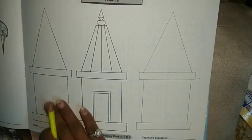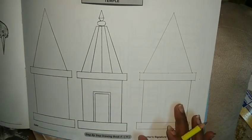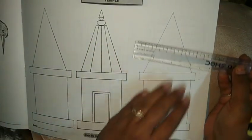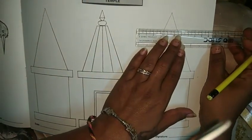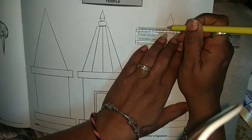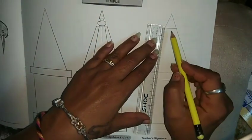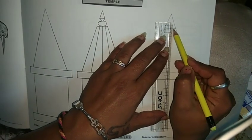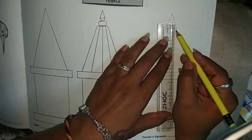So here our step number one is ready. Now let's move to step number two. Here we will draw one sleeping line. Now here we will draw three slender lines.